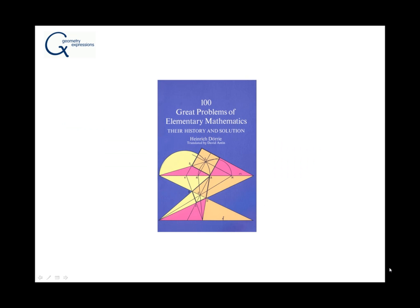Here's the book, 100 Great Problems of Elementary Mathematics, Their History and Solution by Heinrich Dorey, and it's available from Dover at relatively low cost.